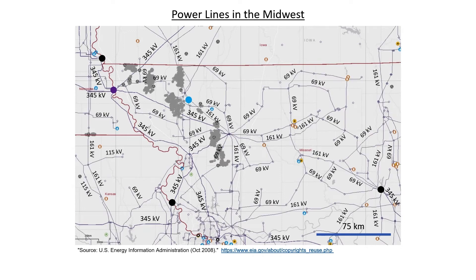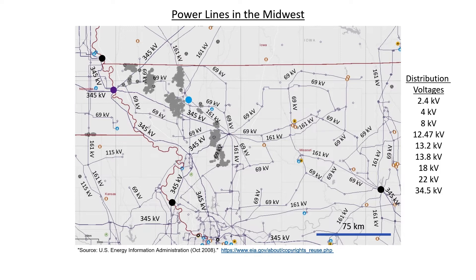Let's now take a look at some of the lower voltage lines. You're now seeing all the power lines with voltages down to 69 kilovolts. These medium-sized power lines are mainly at 161 kilovolts and 69 kilovolts. Of course, this is not all the power lines in the region — there are a number of smaller distribution voltages. The three most common distribution voltages in this region are 4 kilovolts, 12.47 kilovolts, and 13.2 kilovolts. Those three voltages represent the last leg before you reach the pole transformer that delivers plus and minus 120 volts to the customer.